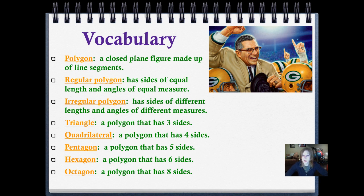A triangle has three sides. A quadrilateral has four sides. A pentagon has five sides. A hexagon has six sides. And an octagon has eight sides.